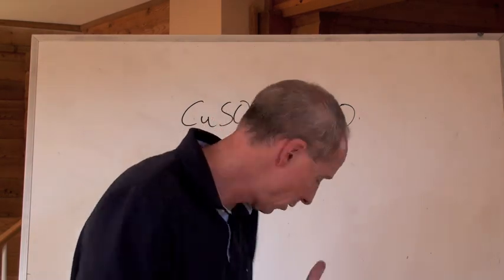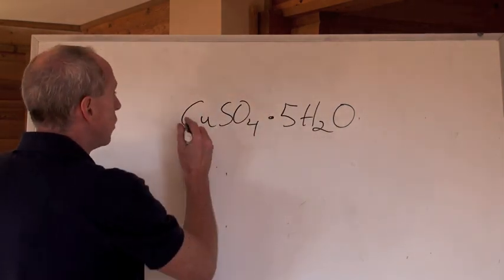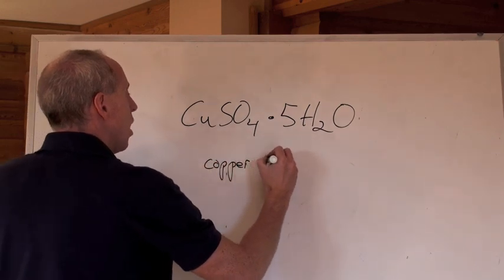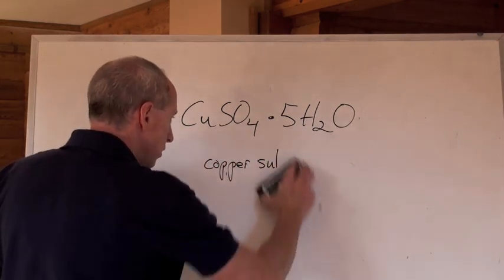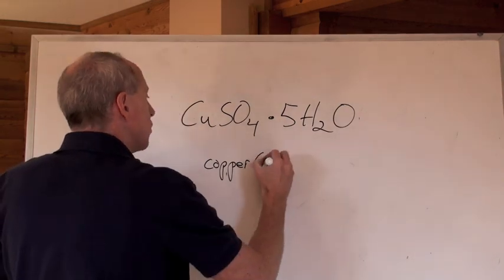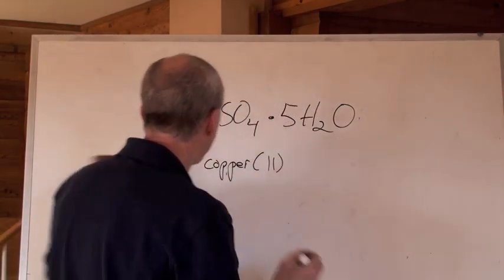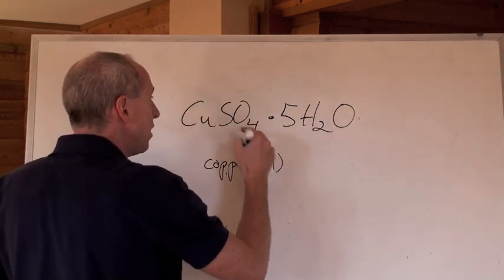What do you call this ionic compound? This is copper(II) sulfate. Hey Ken, I just said copper sulfate, am I right? You are not right, because copper can have more than one charge—it's 2+ or 1+—and this happens to be the copper with the 2+. How do you know?